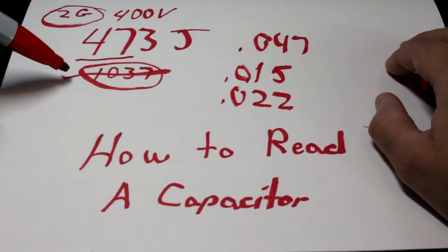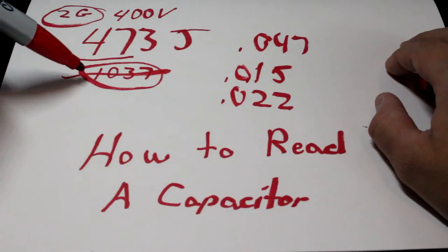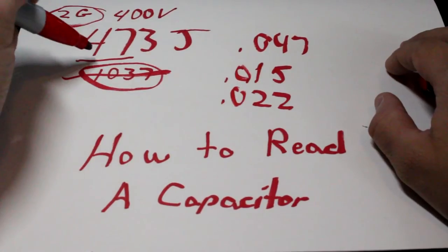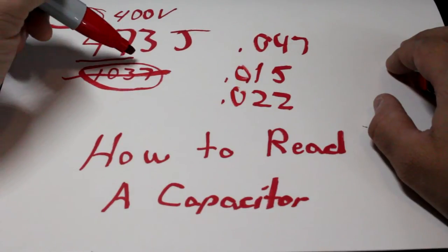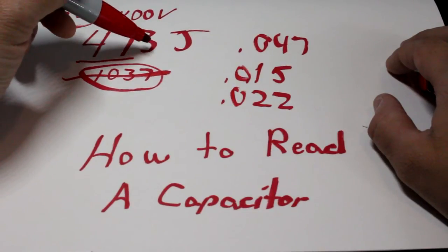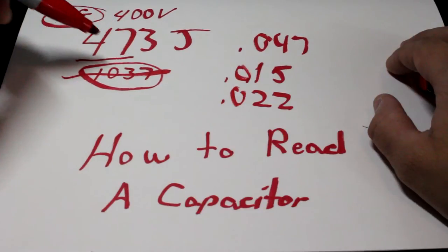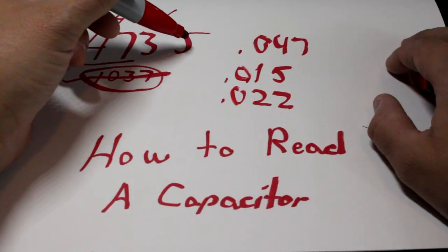The bottom line you don't really need to worry about on a capacitor because that's heat rating. The middle one is the one you're worried about. The middle one is going to be the value of the capacitor, the multiplier, how many points this way you move the decimal, and the tolerance.